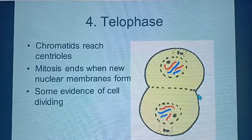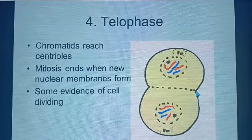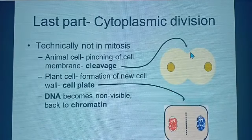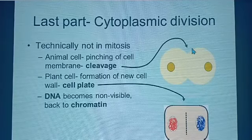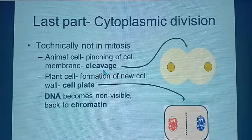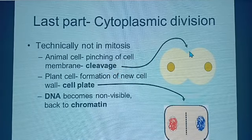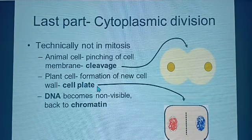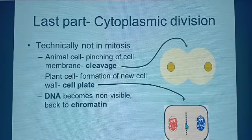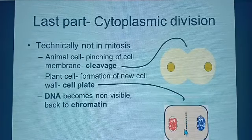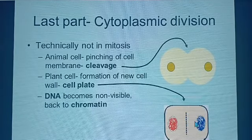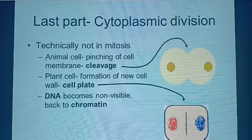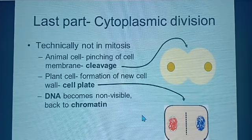During telophase, you can differentiate between a plant cell and an animal cell dividing. For an animal cell, the cell membrane constricts in a process called cleavage. Whereas in a plant cell, there is a formation of a new cell plate, which will develop into a cell wall. Once the cell plate forms, the daughter cells separate and become independent from the single parent cell, starting from the point of interphase.